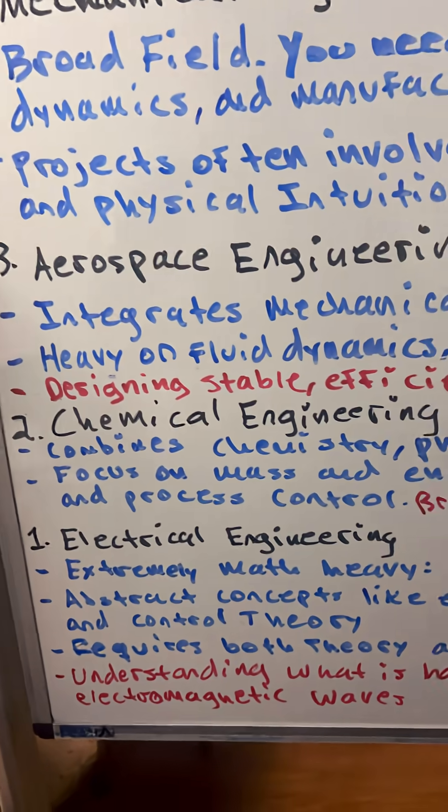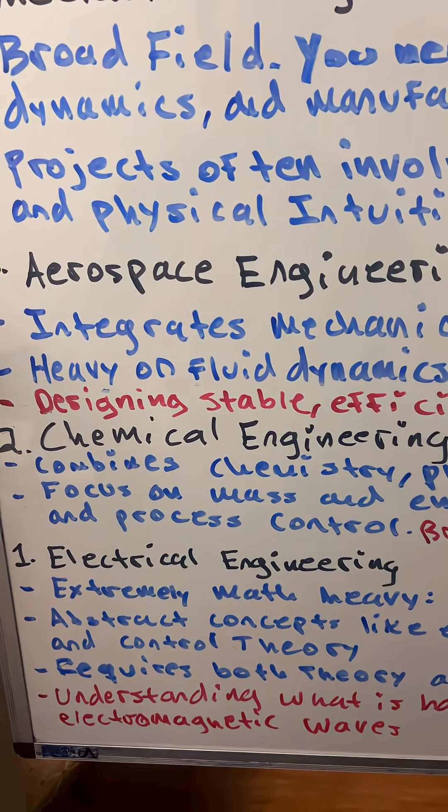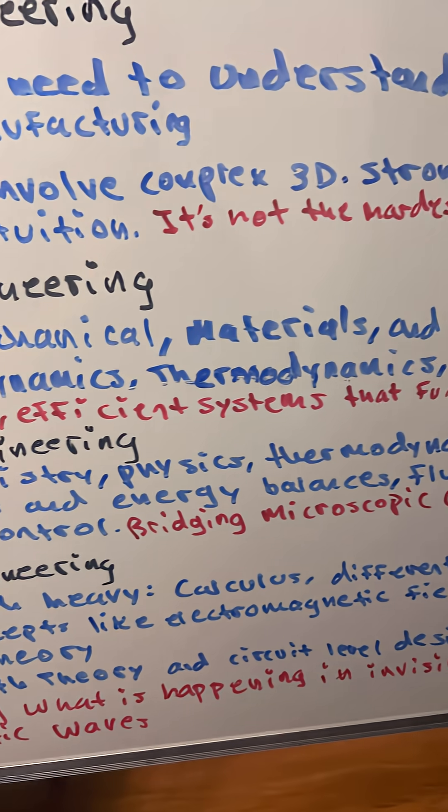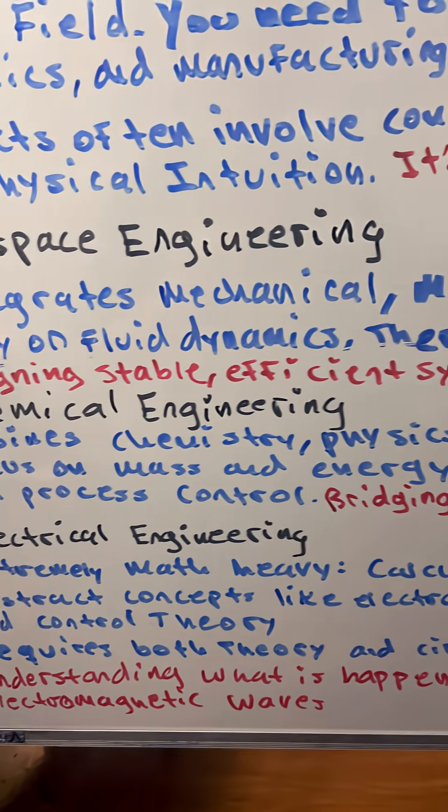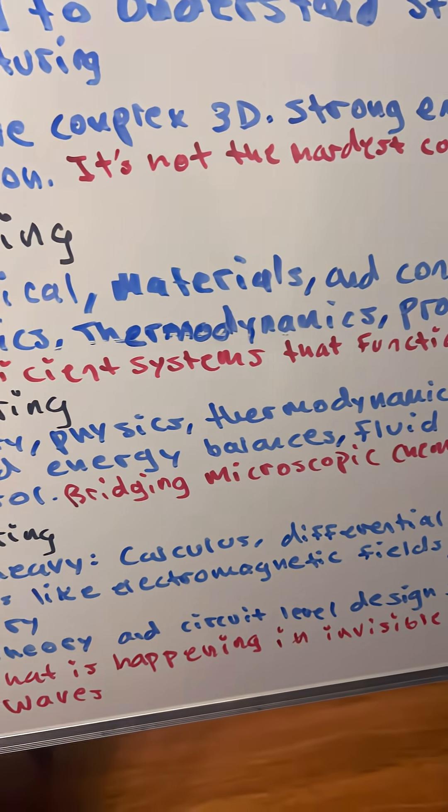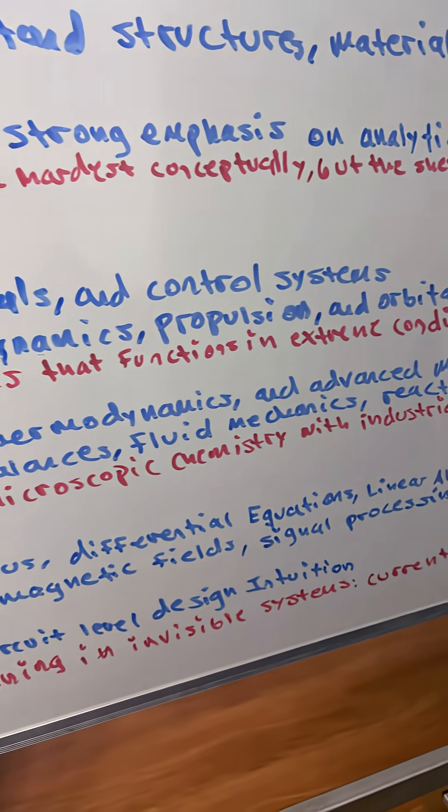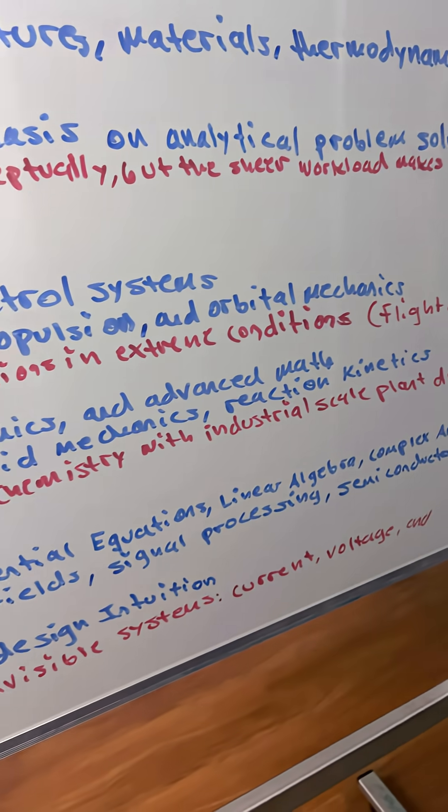Number two, chemical engineering. It combines chemistry, physics, thermodynamics, and advanced math, focused on mass and energy balances, fluid mechanics, and reaction kinetics and process controls. It bridges microscopic chemistry with industrial scale plant design.